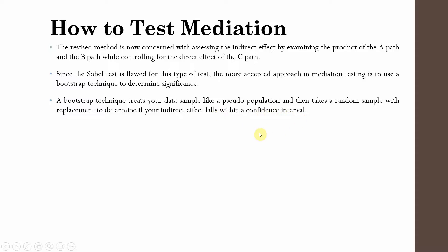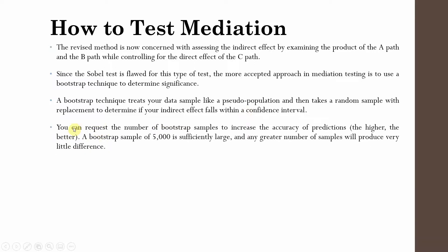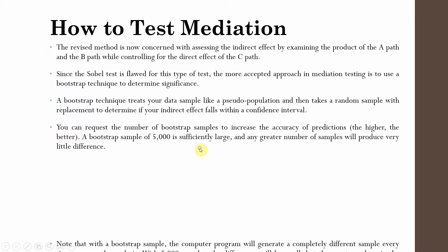A bootstrap technique treats your data sample like a pseudo-population and takes a random sample with replacement to determine if your indirect effect falls within the confidence interval. You are treating your whole sample as a new population whereby, through random number generation, that sample is used to generate another sample — maybe 5,000, 10,000, 1,000, or any number of bootstrap samples. The normal recommendation is 5,000.